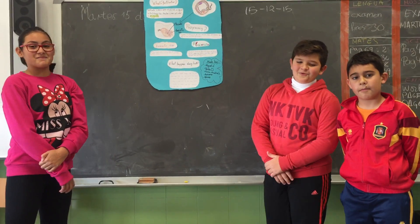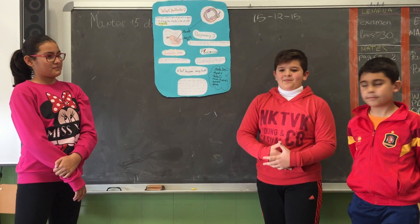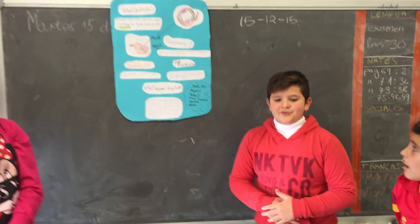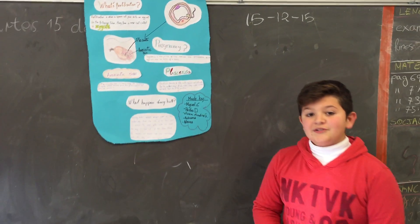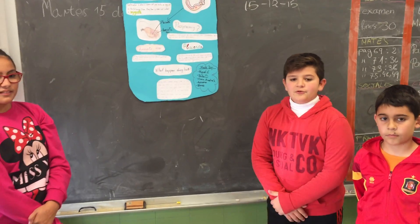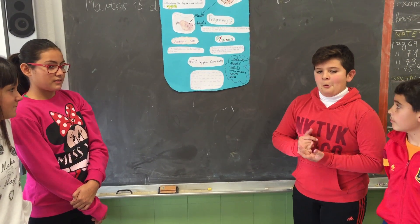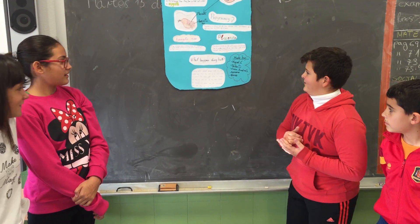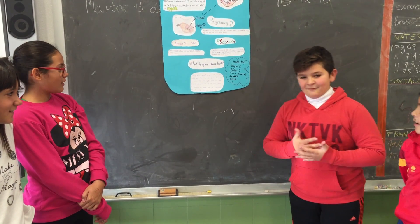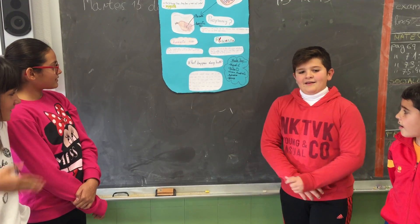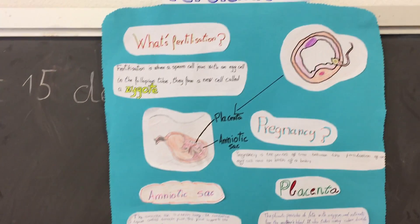What happens during the birth? During the birth, several changes occur in the mother's body. The walls of the uterus contract and the cervix widens to enable the baby to come out. The amniotic sac breaks and the contractions push the baby through the vaginal canal.